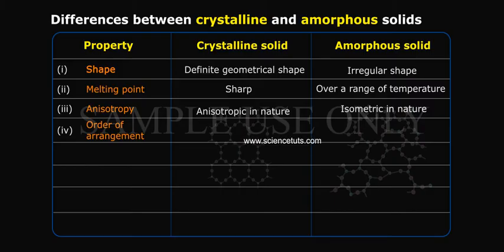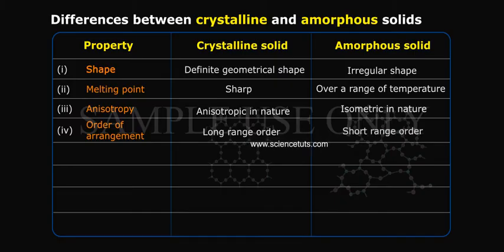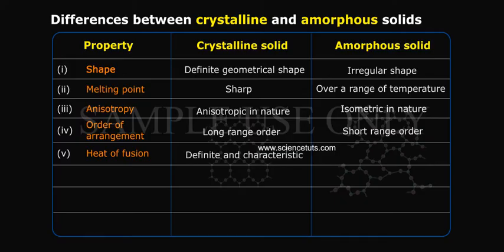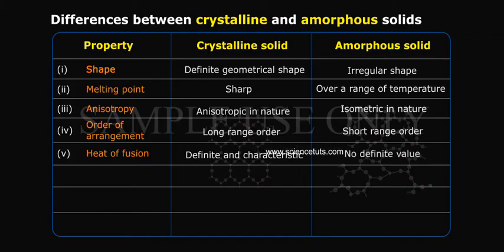Property 4: Order of arrangement. Crystalline solid has long range order. Amorphous solid has short range order. Property 5: Heat of fusion. Crystalline solid has a definite and characteristic heat of fusion. Amorphous solid has no definite value.